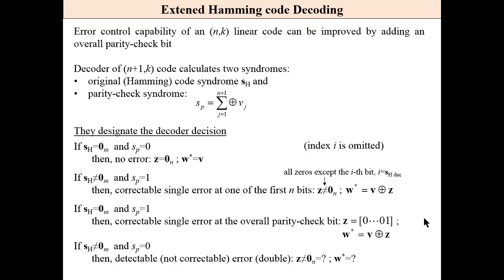Decoding is more complex than for the regular or shortened Hamming code. Now we have two syndromes: one is the syndrome of the regular original Hamming code, S sub H, and the second is the parity check syndrome, which is zero or one. S sub H can be zero or different than zero. We have four possible cases.